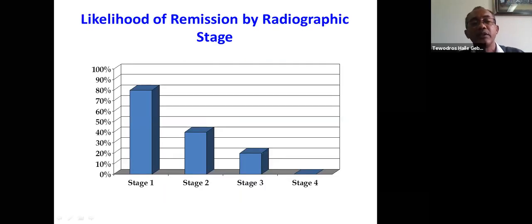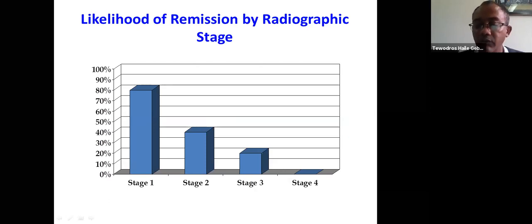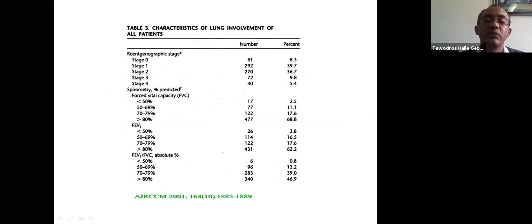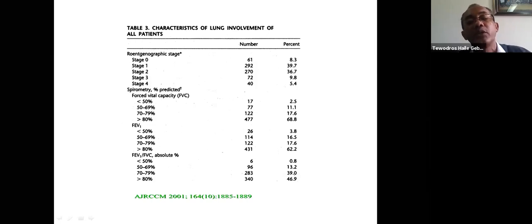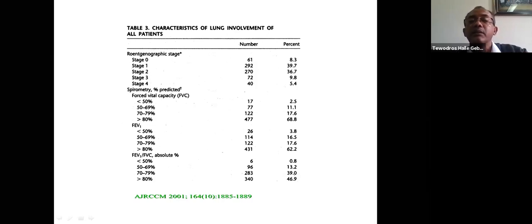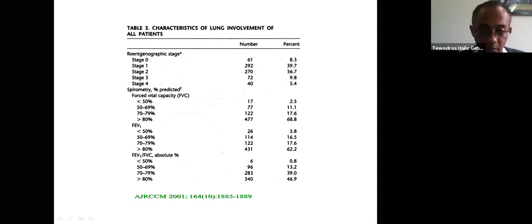The likelihood of remission by radiological stage: stage one, nearly 80% can resolve by themselves; stage two, up to 40%; stage three, up to 20%; stage four, almost none. Stage zero is when there is no pulmonary or intrathoracic lymph node involvement — patients can have purely extra-pulmonary sarcoidosis, and in one study up to 8.3% had no chest abnormalities. Stage one accounted for 40%, stage two 36–37%, stage three 10%, and stage four 5%.